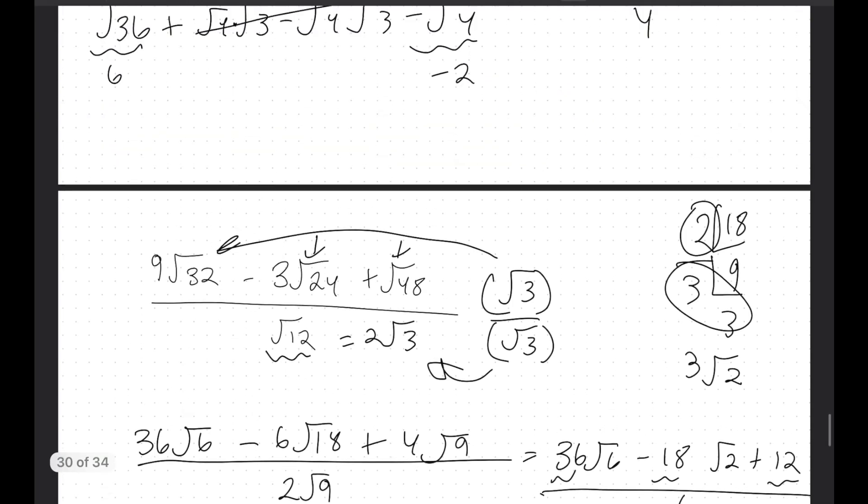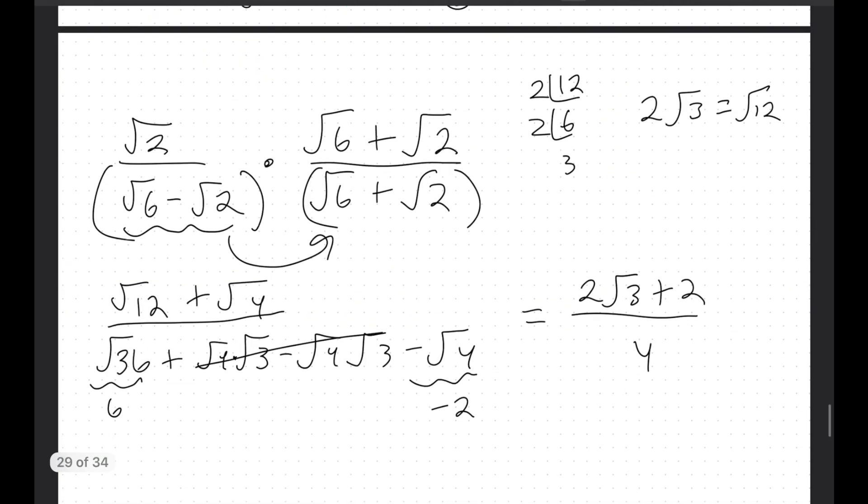Okay, so yeah, that's how we do these ones. If you have one where the denominator has like something plus or something minus, flip the sign and multiply by the conjugate. And then all the other ones, just multiply by the normal root that's on the bottom.